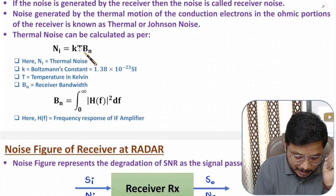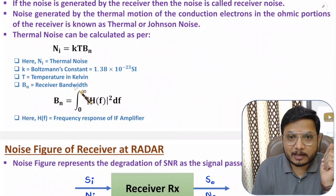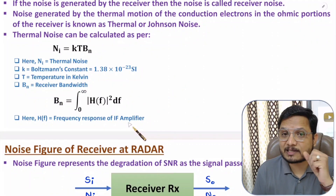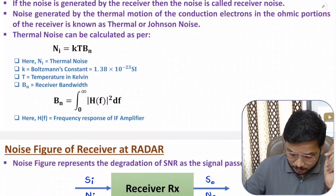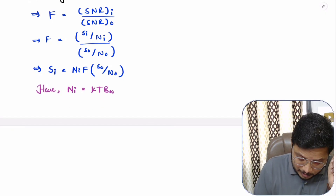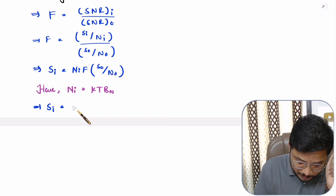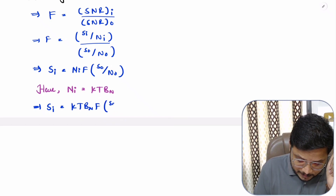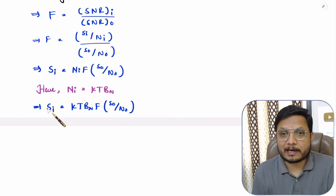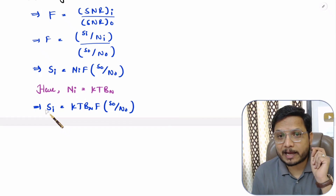Thermal noise is happening because of temperature, that is KT·BN, where K is Boltzmann's constant, T is temperature in Kelvin, and BN is the receiver bandwidth — specifically the bandwidth of the IF amplifier. So if we substitute NI = KT·BN, then the signal power at input SI equals KT·BN multiplied by the noise figure F multiplied by the signal-to-noise ratio at output (SO/NO). This is the signal power at the input of the receiver that is received by the antenna.